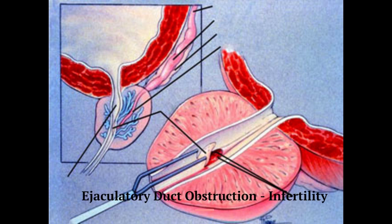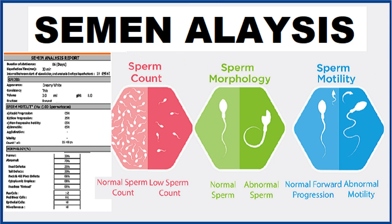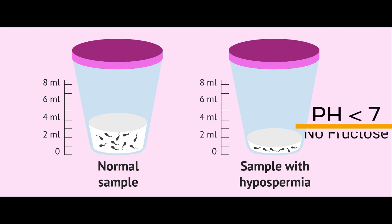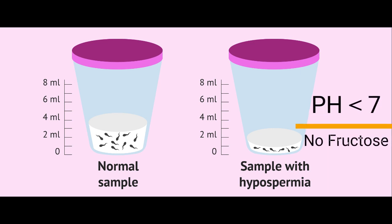The diagnosis of ejaculatory duct obstruction leading to male infertility is confirmed by a combination of findings on semen analysis: ejaculate volume less than 1 milliliter and a pH less than 7 that contains no sperm or fructose, in the presence of palpable vas deferens.